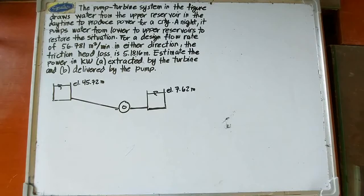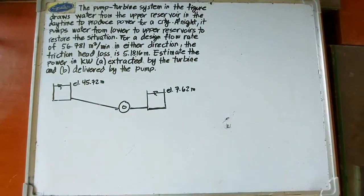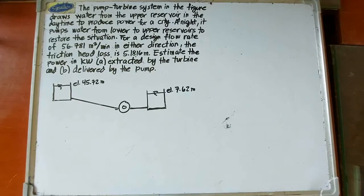The pump-turbine system in the figure draws water from the upper reservoir in the daytime to produce power for a city. At night, it pumps water from the lower to upper reservoir to restore the situation. For a design flow rate of 56.781 cubic meters per minute in either direction, the friction head loss is 5.1816 meters. Estimate the power in kilowatts: letter A, extracted by the turbine, and letter B, delivered by the pump.